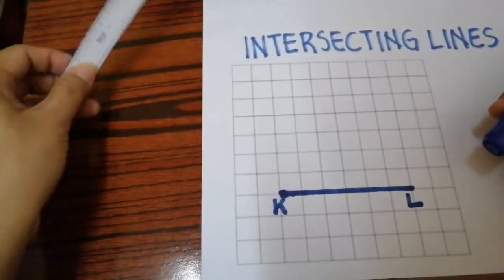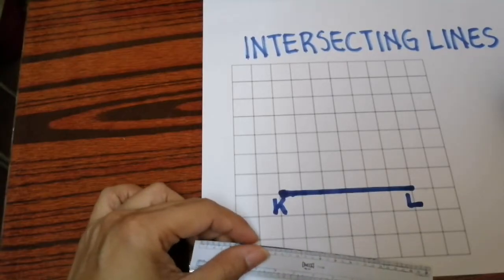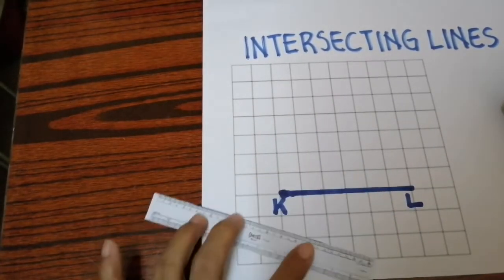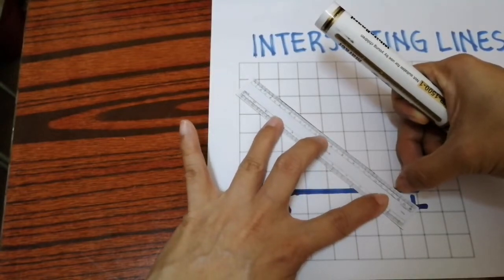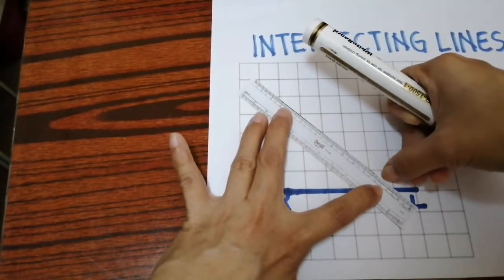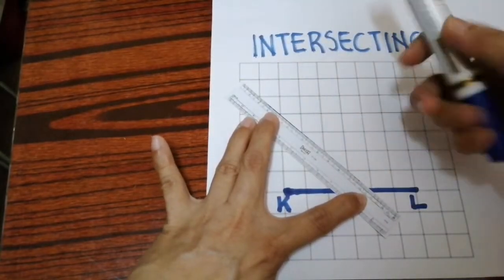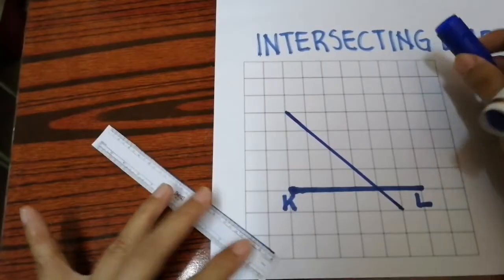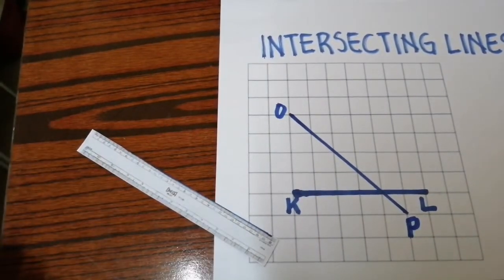You have to remember that intersecting lines do not create a 90-degree angle or a right angle. So I decided to create a diagonal line intersecting KL. I'll draw a straight line crossing over five squares. I will name this line as OB. There you have it — our own intersecting lines.